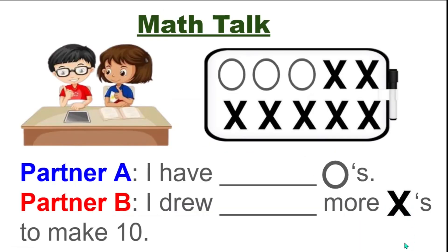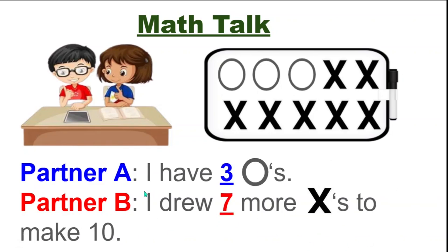I see partner A's drawings and partner B's drawings on the board. Now let's have a map talk about our drawing. Partner A, fill in the blank: I have blank circles. Now partner B, fill in the blank: I drew blank more X's to make 10. Partner A should have said: I have three circles. And partner B should have said: I drew seven more X's to make 10.